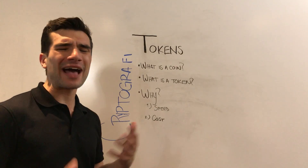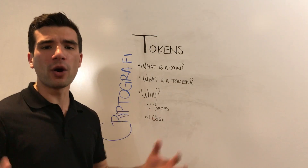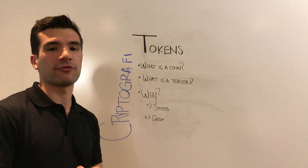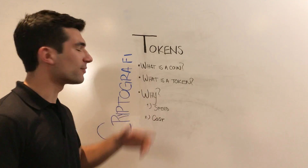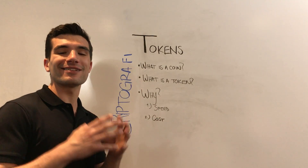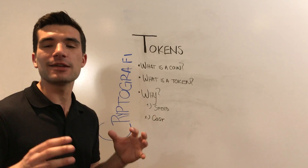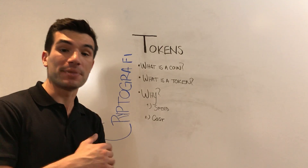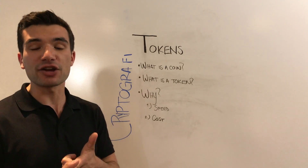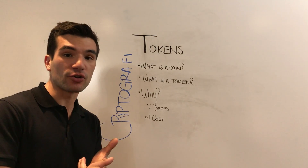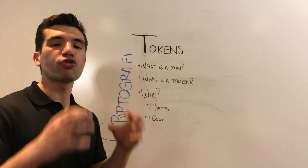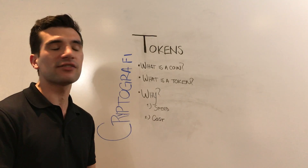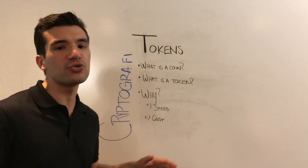People keep asking the question: what is a coin? What is a token? And I want to unlock some of that for you. First, a coin. A coin is an entirely independent blockchain, kind of like Bitcoin, Litecoin, Tezos, Ripple. These are all totally independent blockchains with their own use cases, own management, own everything.